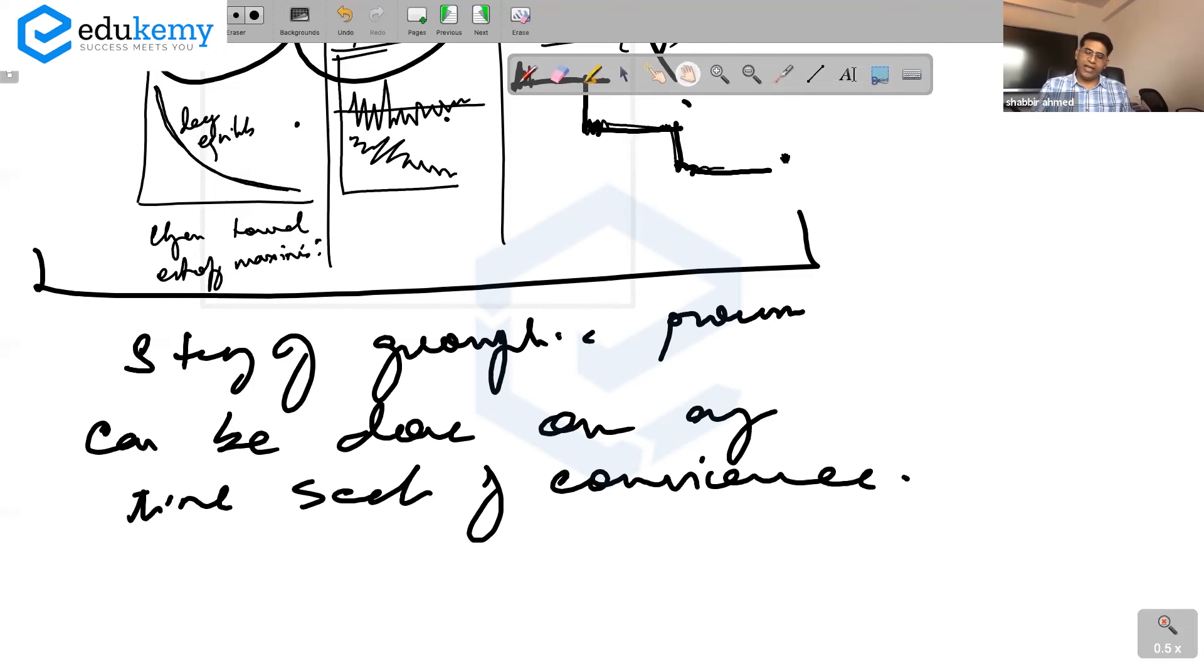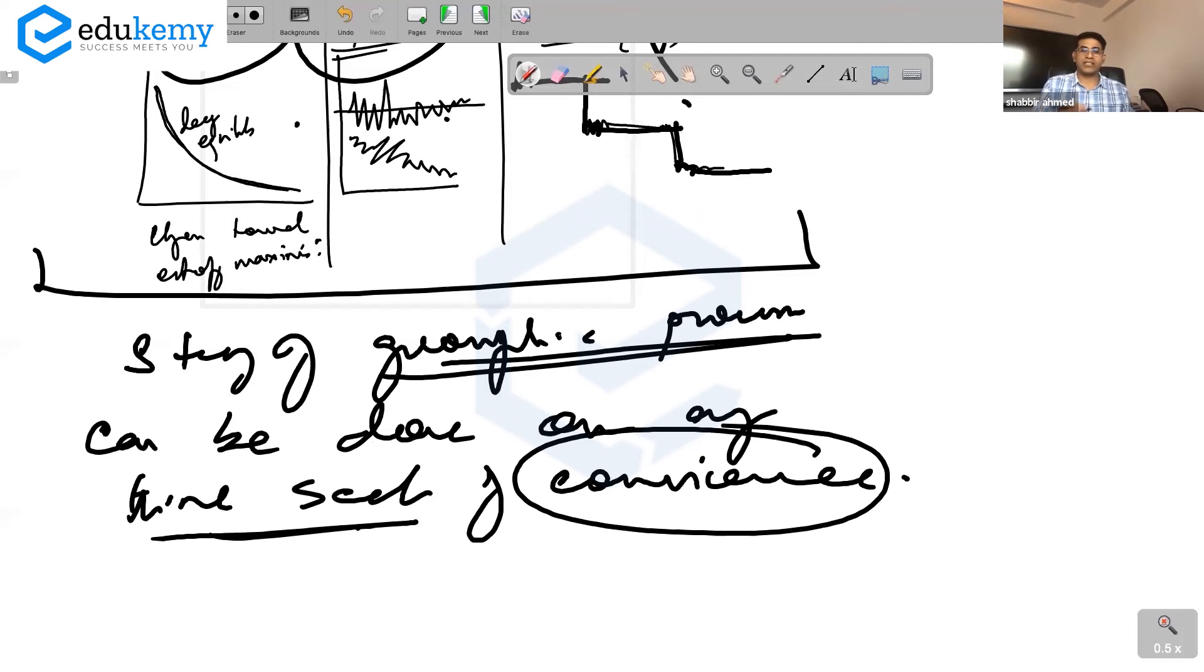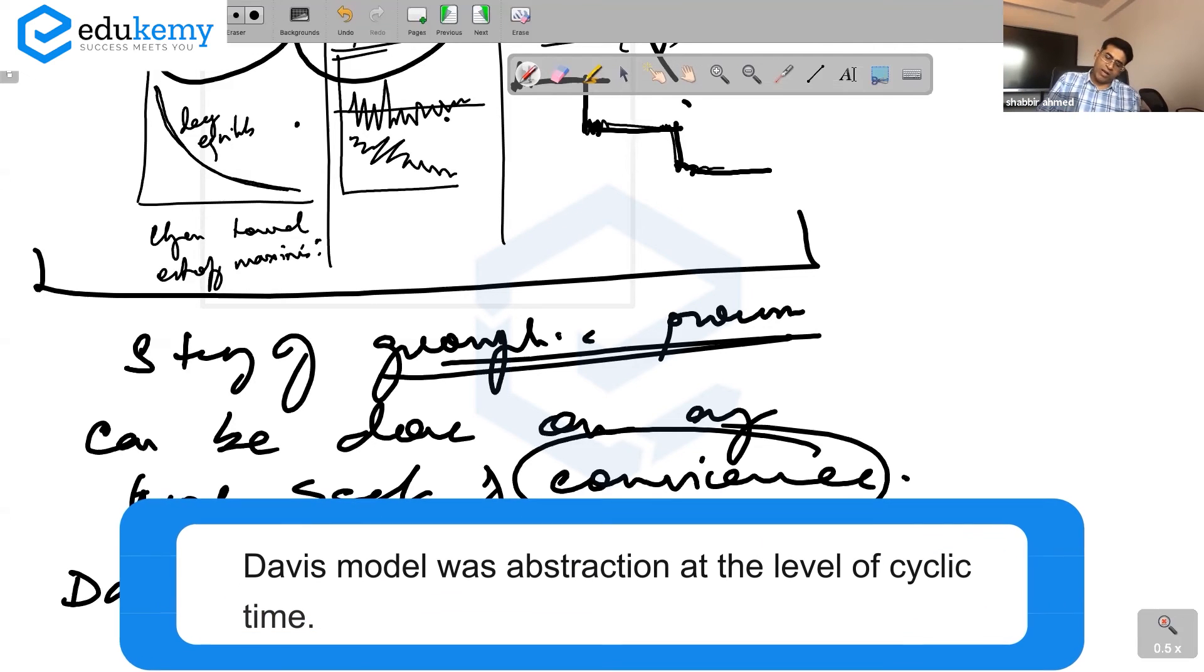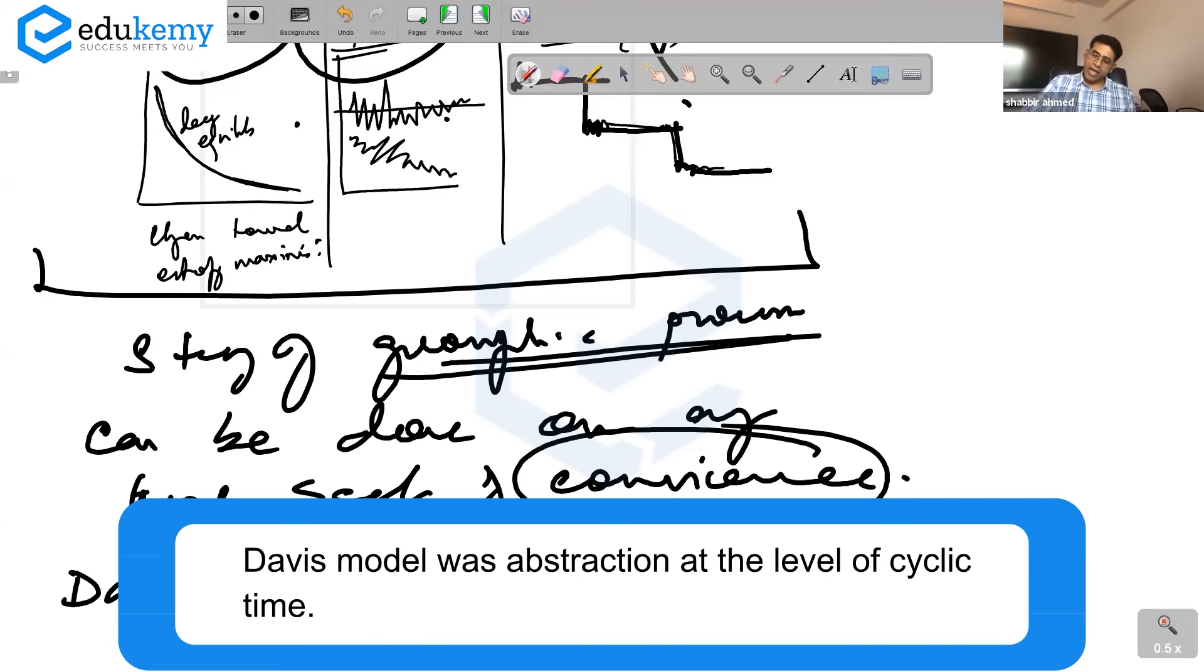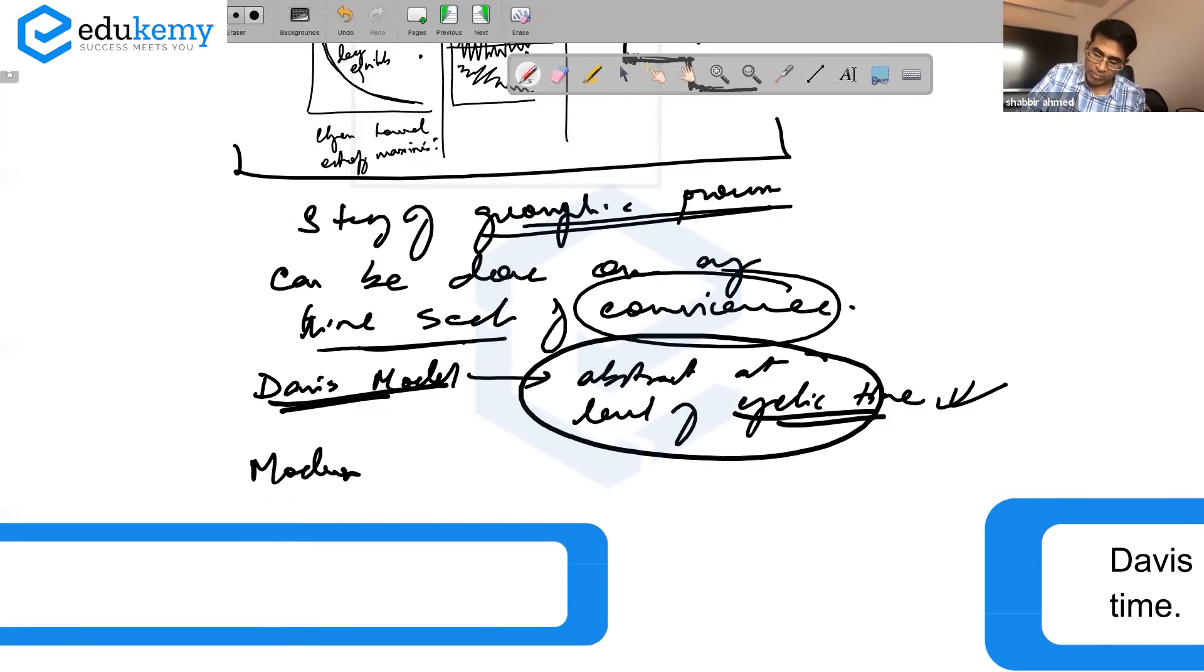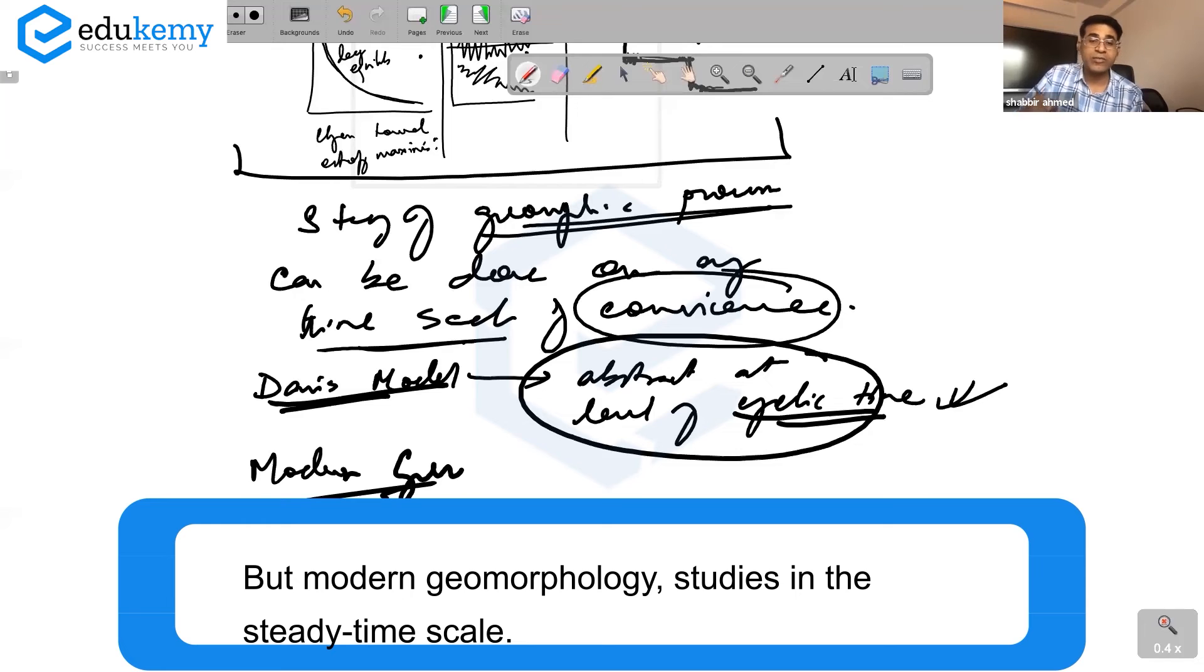In the study of geomorphic processes, time scale matters on the issue of convenience. What is our convenience of study? Davis's model was abstraction at the level of cyclic time, long term. Whereas modern geomorphology studies mostly in the steady-state time scale.